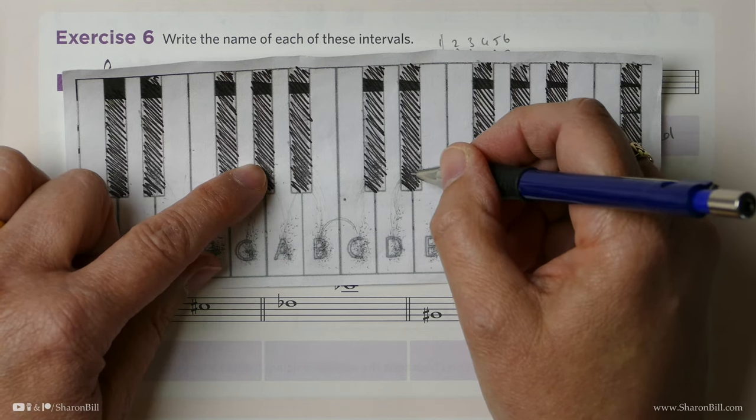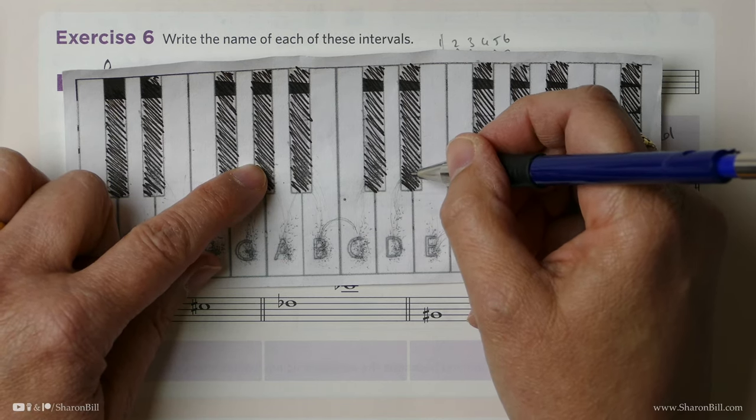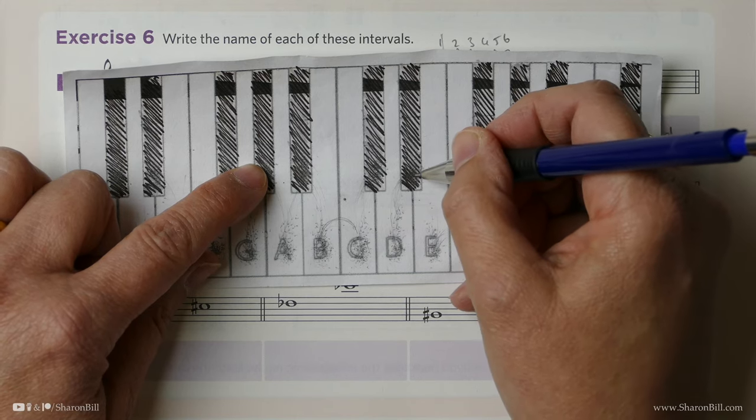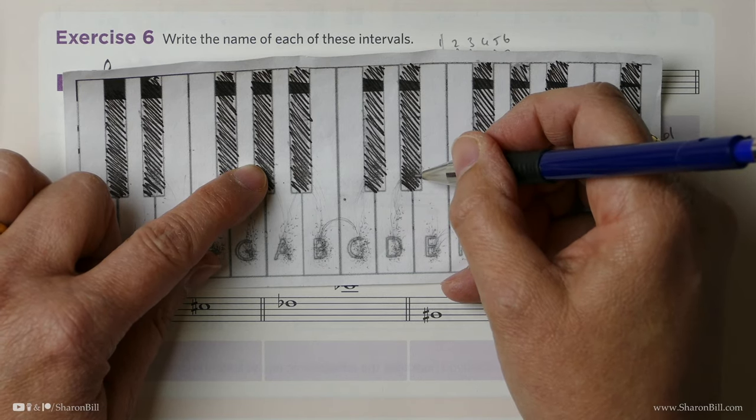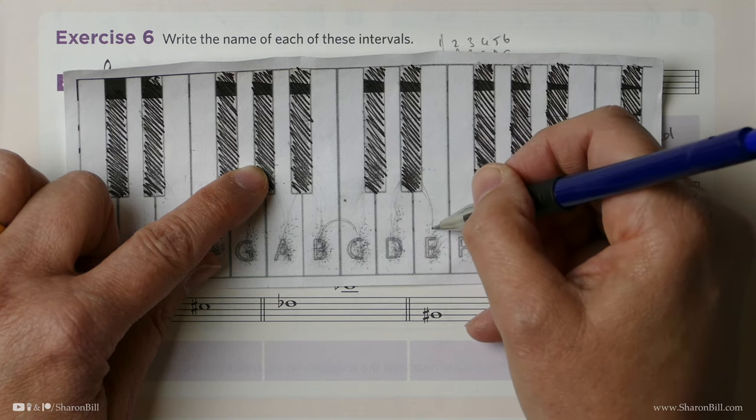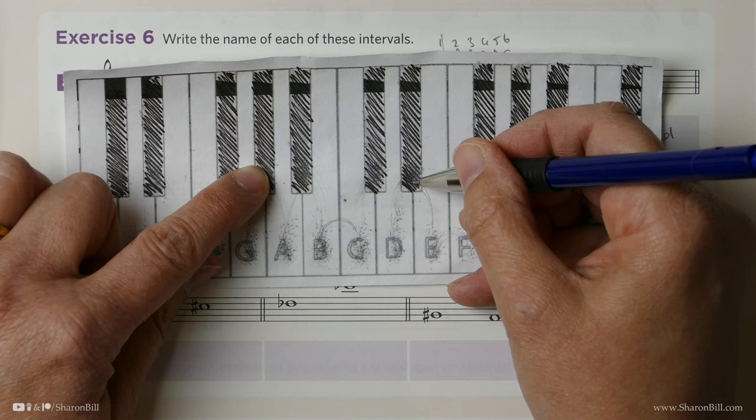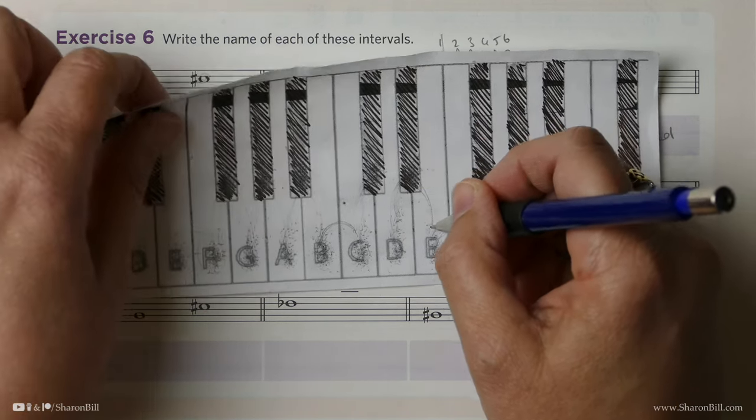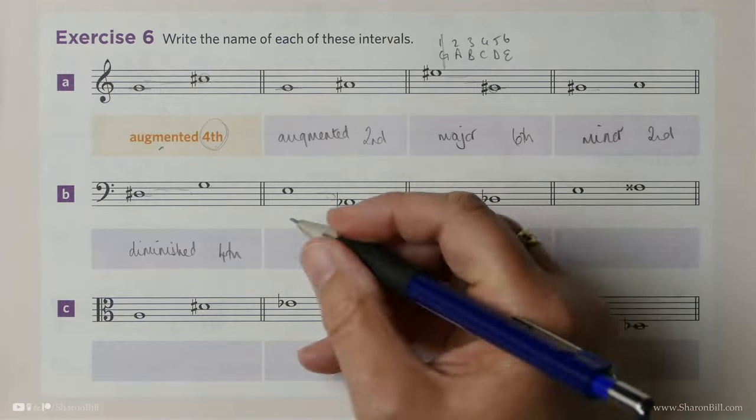Think about your scale of A flat major, B flat, E flat, A flat, D flat. However, it's not an E flat. It's an E natural. So we've actually made it bigger. We're not on the E flat. We're on the E natural. So a perfect 5th made bigger is augmented.